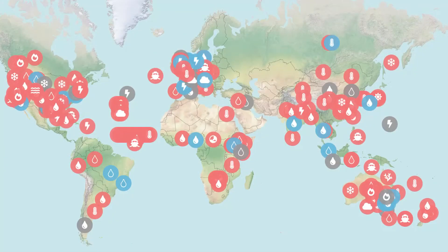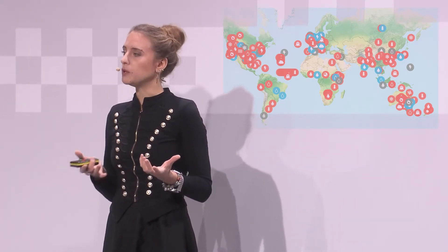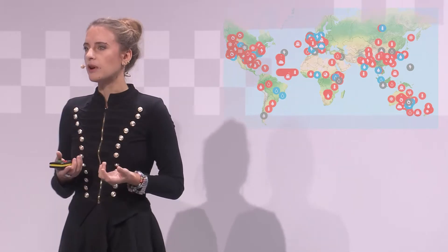We have now developed this science, and this is an overview that Carbon Brief — a climate and energy news website — put together earlier in the year, where they took all the studies of extreme event attribution that have been done, which are about 190 in total. These are all the extreme events where we know what the role of climate change is. When you look at this map, you will see a lot of red — those are all the events where climate change is making the event more likely and more intense. There are some blue events where climate change is not playing a role. And there are grey ones where we can't say, because we don't have enough observational data or climate models that can reliably simulate that type of event.